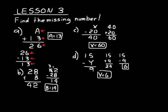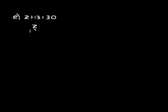Let's do a few more. Look at this problem: Z plus 13 equals 30. We've already done addition problems like this; this one is just written horizontally. If you want to rewrite it vertically, you can — just write Z, 13, and 30. Then do subtraction: 30 minus 13. 10 minus 3 is 7, 2 minus 1 is 1. So Z is equal to 17.